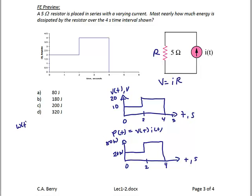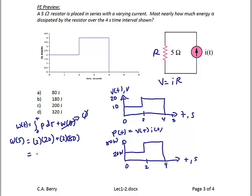Remember, energy W(t) equals the integral from 0 to T of P d-tau plus W(0). Since resistors cannot store energy, W(0) is 0. The integral of a waveform is the same as the area under the curve. So the energy at 4 seconds is 2 times 20 for the area of the first rectangle, plus 2 times 80 for the area of the second rectangle: 40 plus 160 equals 200 joules. So the energy from 0 to 4 seconds is 200 joules, or letter C.